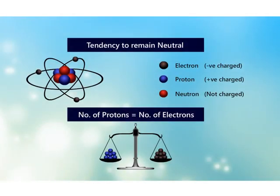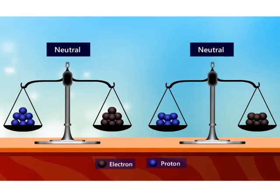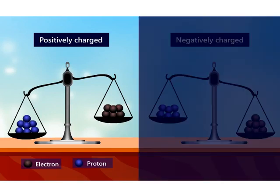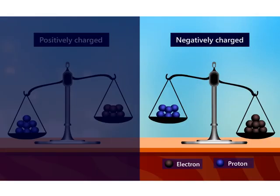All substances are made up of small particles of matter called atoms. These atoms have equal numbers of positive and negative charges and are electrically neutral. When a substance is rubbed, some negative particles are transferred from one to another. The substance from which the negative particles are removed becomes positively charged, and the other substance becomes negatively charged.